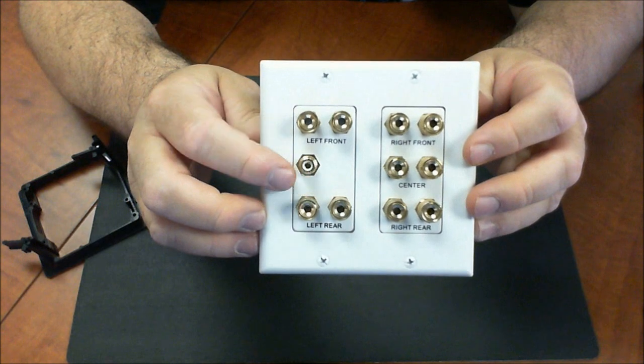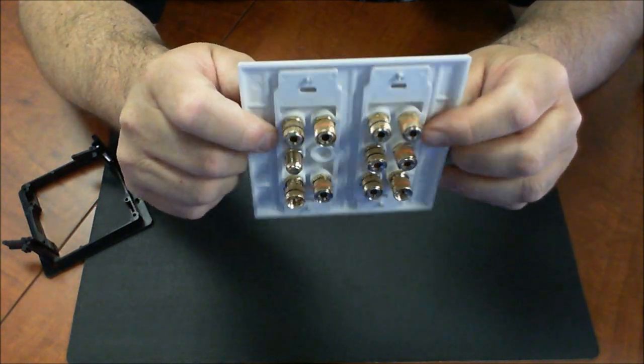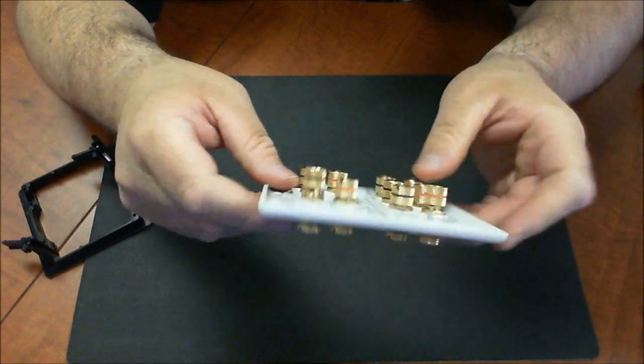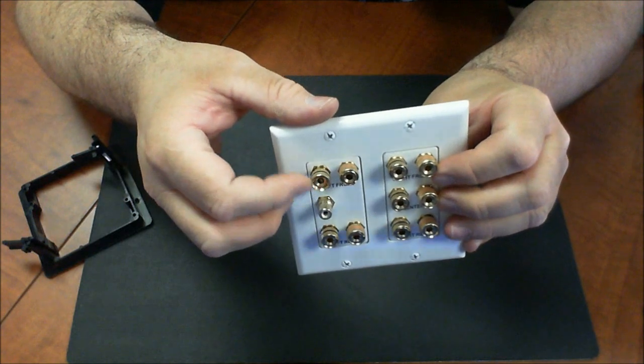In the subwoofer you have an RCA and then the back would be an F connector for coax. So again, you can attach your speaker wire through this either via screwing down the speaker wire or you can use a banana plug connection type.